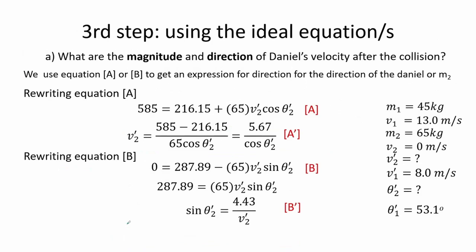The third step is to use the ideal equations to solve for letter A. We do this by using equations obtained earlier and rewriting the first equation to obtain an expression for the velocity of the second mass post-collision as equation A'.